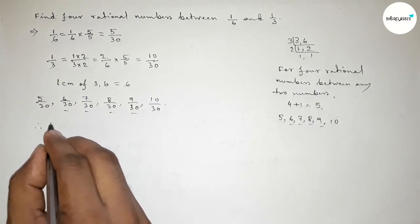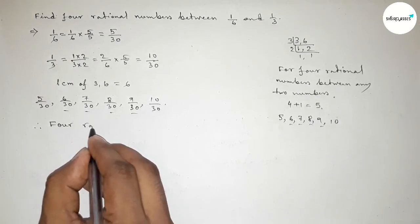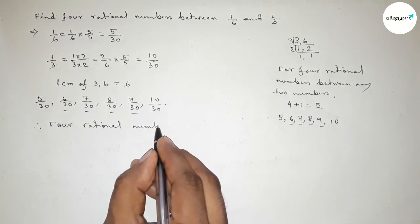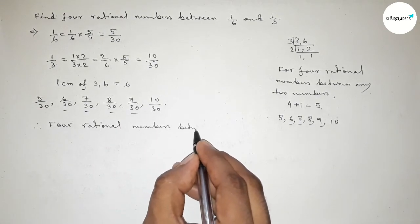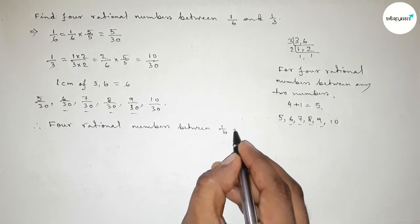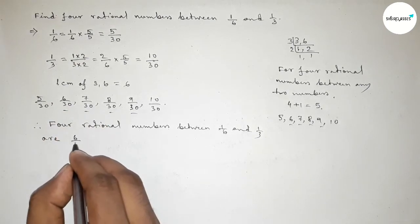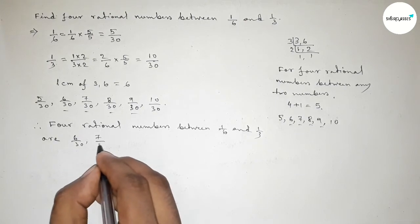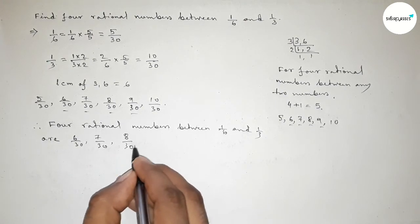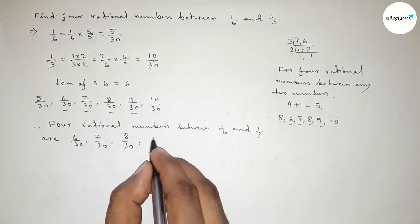So therefore, the required four rational numbers between 1 over 6 and 1 over 3 are: first one 6 over 30, 7 over 30, 8 over 30, and last one 9 over 30.